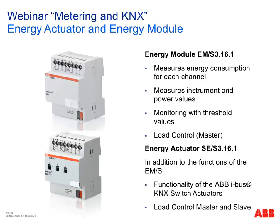Now the direct KNX measuring devices: the energy module EMS 3161 and the energy actuator SES 3161, both with three channels. The energy actuator also has integrated relays for switching three circuits directly up to 20 amperes — no current or voltage transformer solutions possible here. For higher currents, the energy meter with meter interface should be used. The energy module measures only, while the energy actuator also switches the circuit.